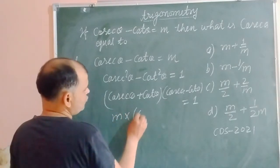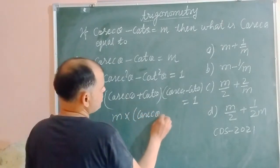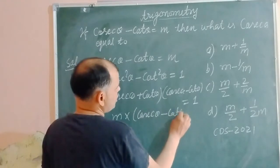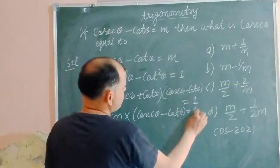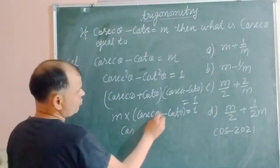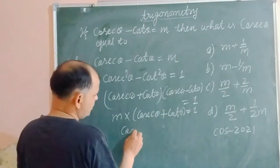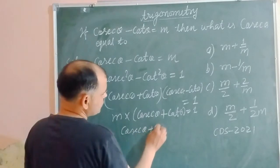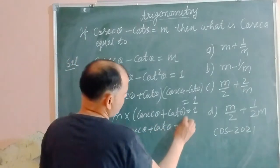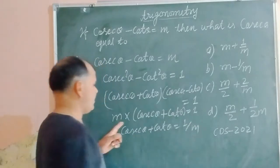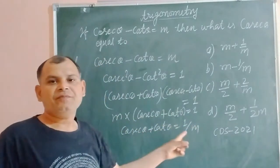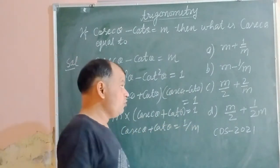So m into cosec theta plus cot theta equal to 1. Finally we got the value of cosec theta plus cot theta, this is 1 upon m. We divide 1 by m from this side. Now we have two equations.